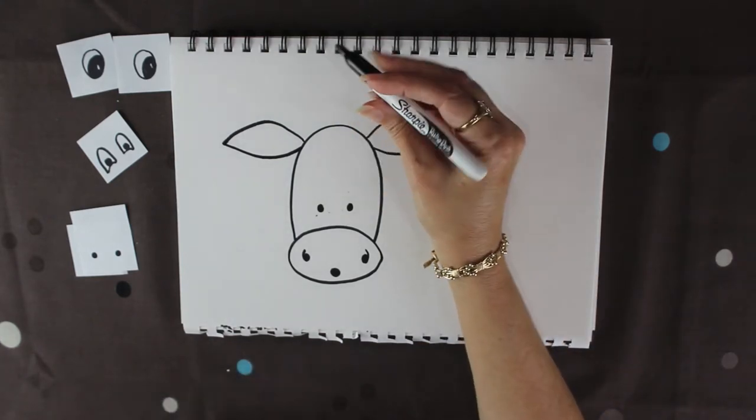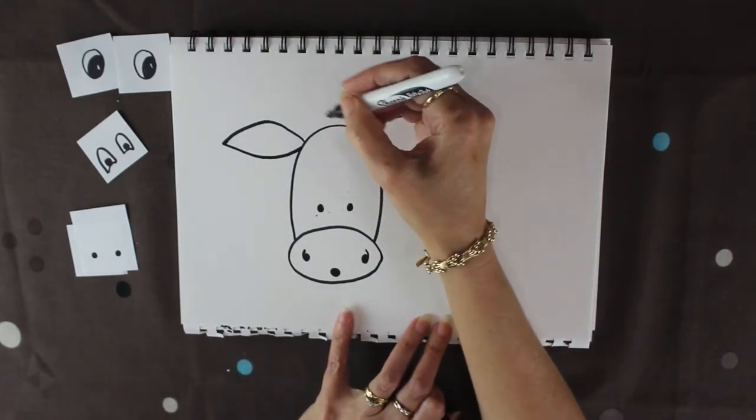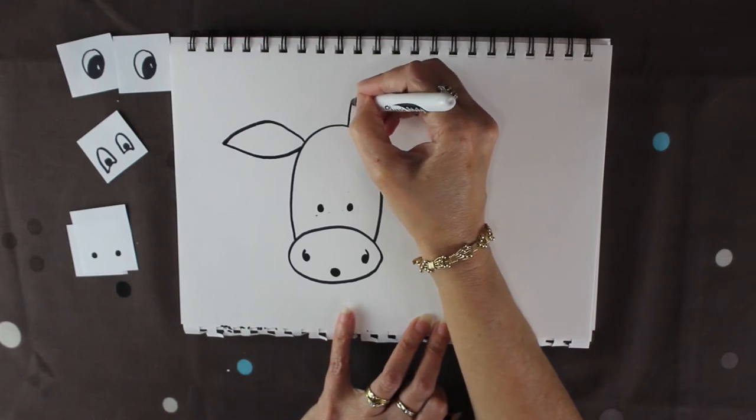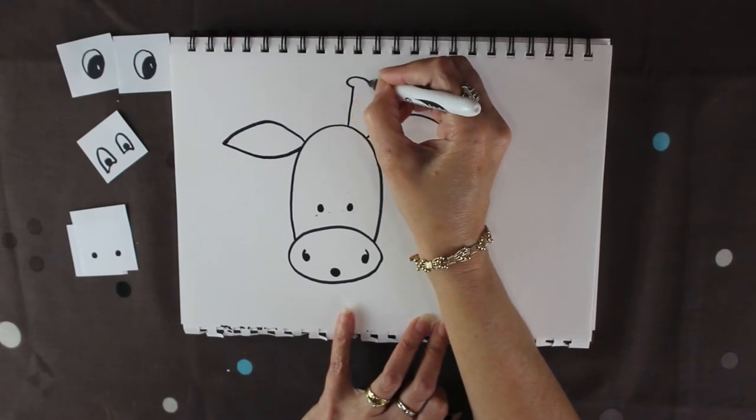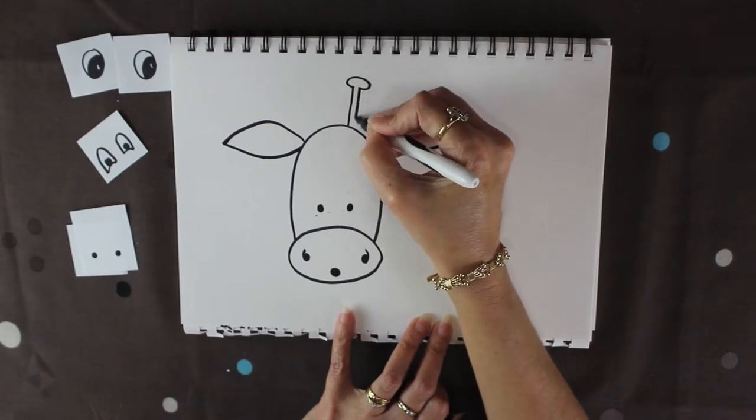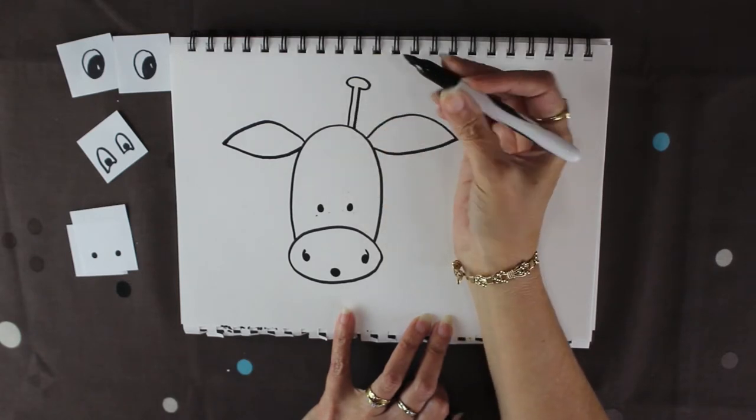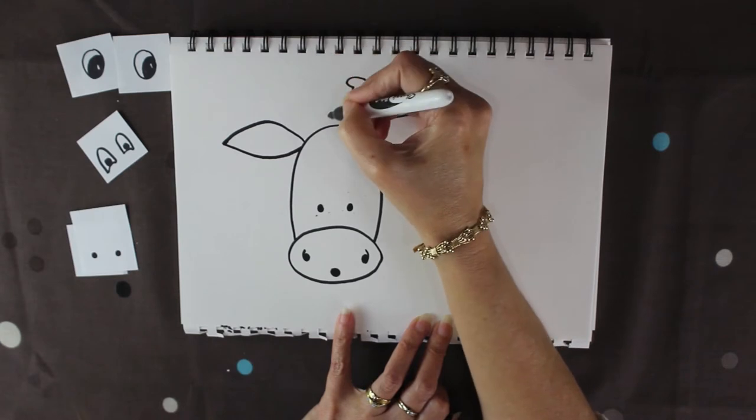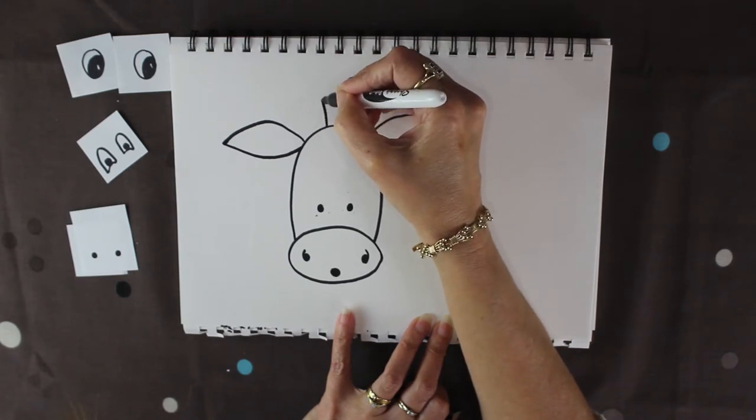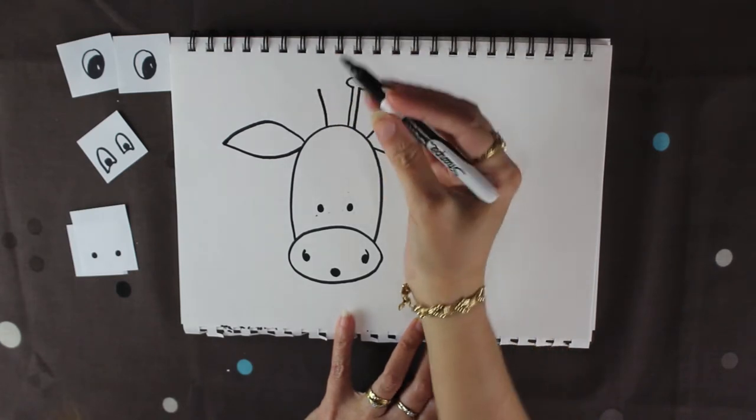Now the thing that's going to actually make him look like a giraffe: on the top of his head I'm going to put the little knuckles. I'm not sure what they're called, probably I should know but I don't.